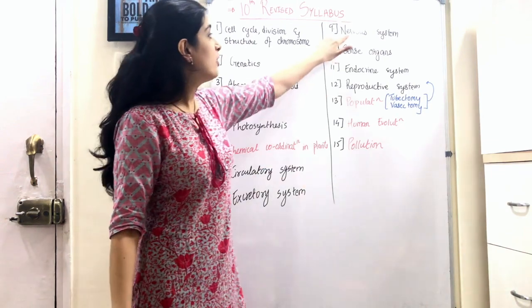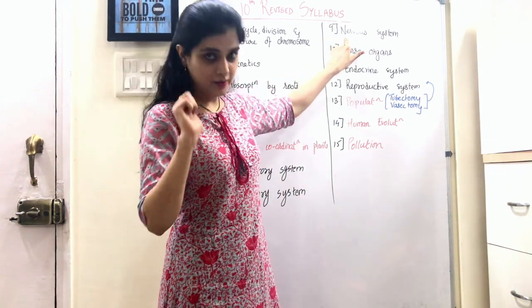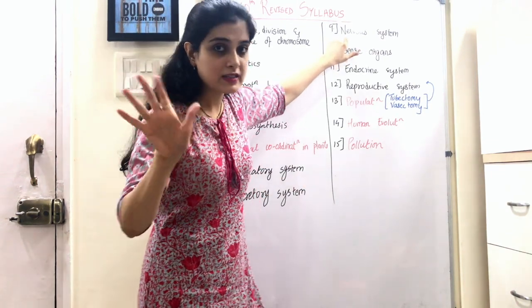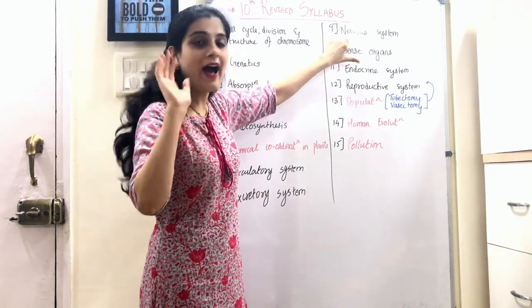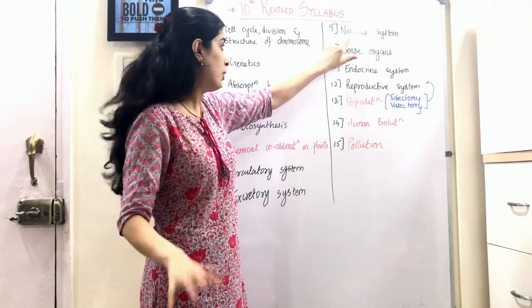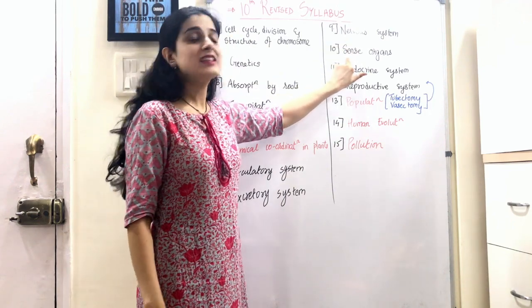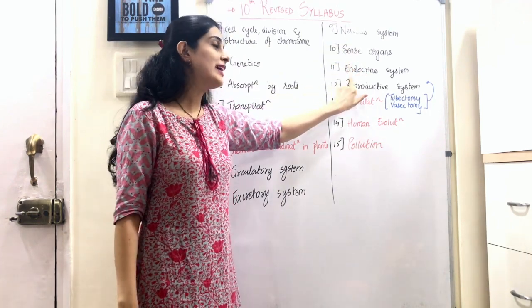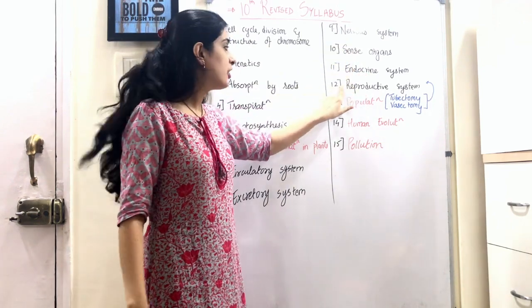The Circulatory System is obviously there, Excretory System is there, Nervous System is there — all the important systems you have to know about. Sense Organs is there, Endocrine System is there, and Reproductive System is there.